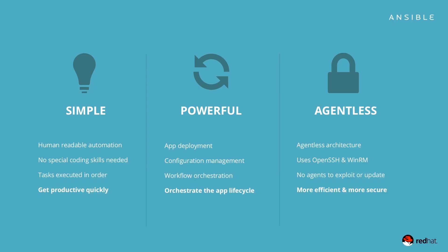Ansible has a number of qualities that make it the most rapidly growing automation platform in the world. First, it's extraordinarily simple. Playbooks are human and machine readable, so no special coding skills are required, and even people in your IT organization that don't know what Ansible is can likely read a playbook and understand what's happening. This simplicity means that you can start to use Ansible to do real work with it in just minutes. Ansible also works like you think — tasks are always executed in order.